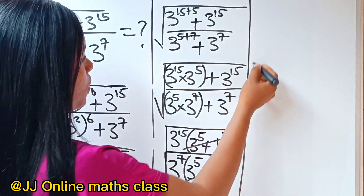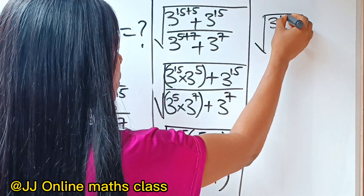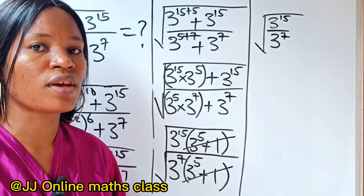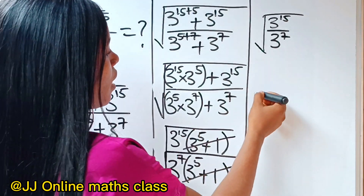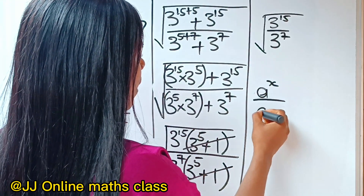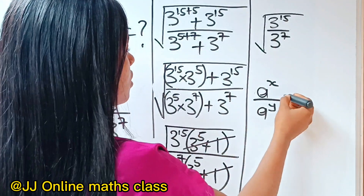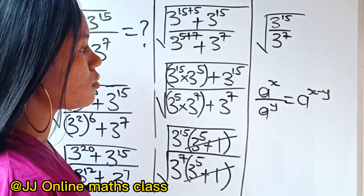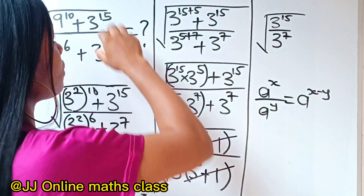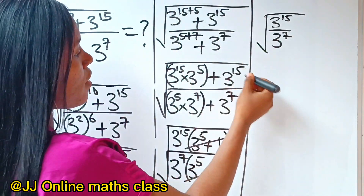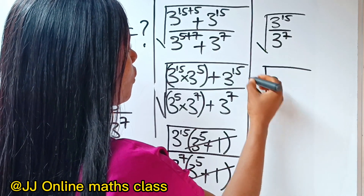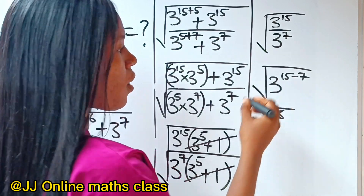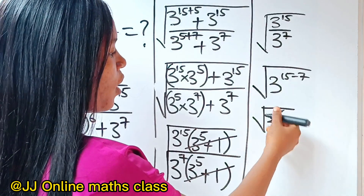We are now left with square root of 3 to the power of 15 divided by 3 to the power of 7. We apply the law of indices: a to the power of x divided by a to the power of y equals a to the power of x minus y. So we can write this as square root of 3 to the power of 15 minus 7, which is square root of 3 to the power of 8.